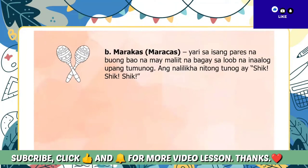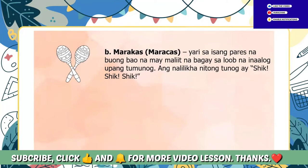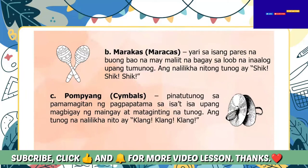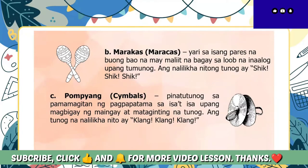Ang ikalawang halimbawa ay ang maracas. Ito ay yari sa isang pares na bao na may maliit na bagay sa loob na inaalog upang tumunog. Ang nalilikha nitong tunog ay shik-shik-shik. Ang panghuling halimbawa ng instrumentong perkusyon ay ang pompiang o simbols na kalimitang nakikita sa mga pistang bayan. Ito ay pinatutunog sa pamamagitan ng pagpapatama sa isa't isa upang magbigay ng maingay at mataginting na tunog. Ang tunog na nalilikha nito ay klang-klang-klang.